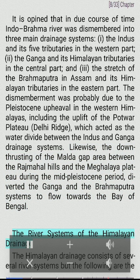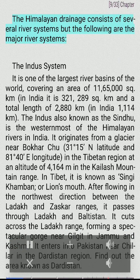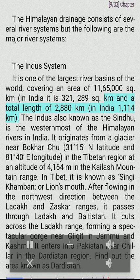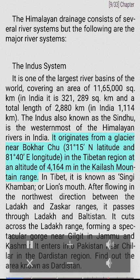The Himalayan drainage consists of several river systems. The Indus system is one of the largest river basins of the world, covering an area of 11,65,000 sq km, with 3,21,289 sq km in India and a total length of 2,880 km (1,114 km in India). The Indus, also known as the Sindhu, is the westernmost of the Himalayan rivers. It originates from a glacier near Bokhar Chu (31°15'N, 81°40'E) in the Tibetan region at an altitude of 4,164 meters in the Kailash mountain range.